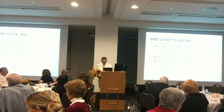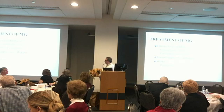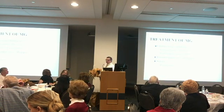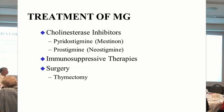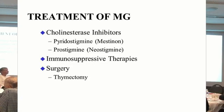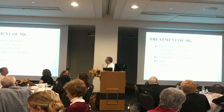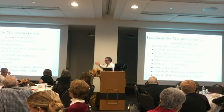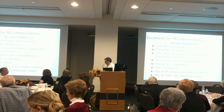Treatment can be broken down simply into the class of drugs called acetylcholinesterase inhibitors, immunosuppressive drugs, and surgery. These treatments all came into practice over the last 80 years. Drugs like pyridostigmine were developed in the 30s. Mechanical ventilation came into effect in the 50s, and steroids and plasmapheresis were first used for myasthenia in the 1960s.